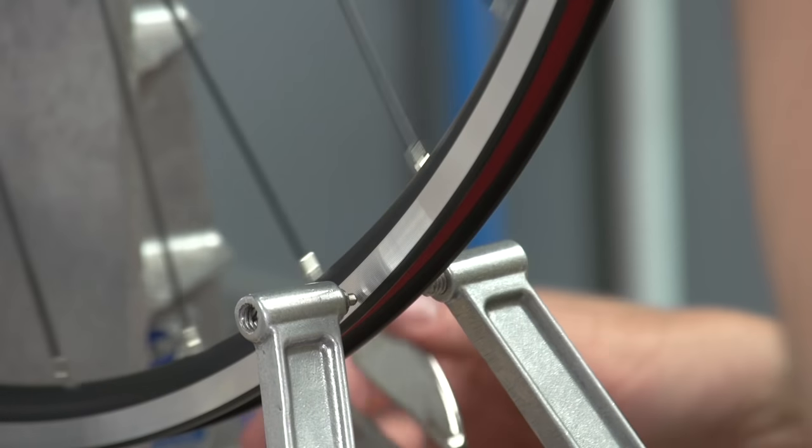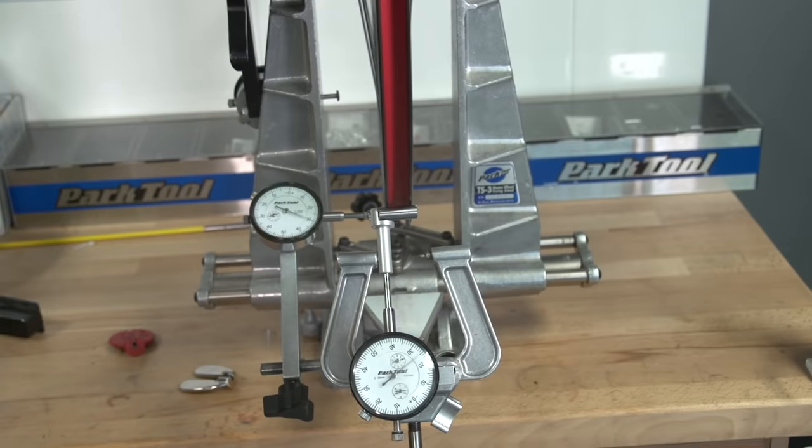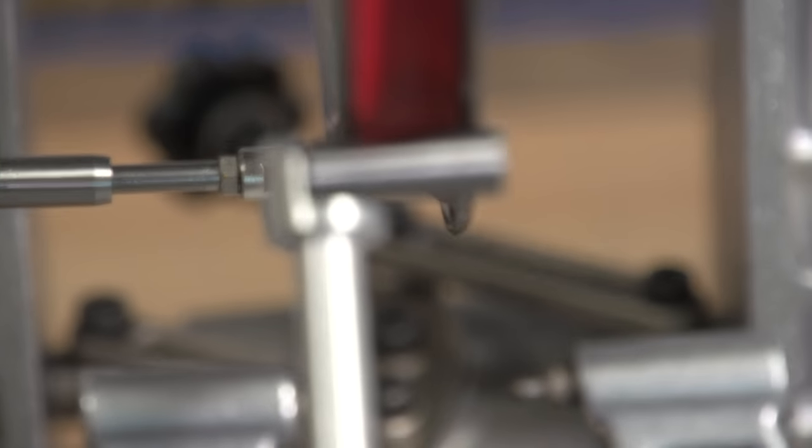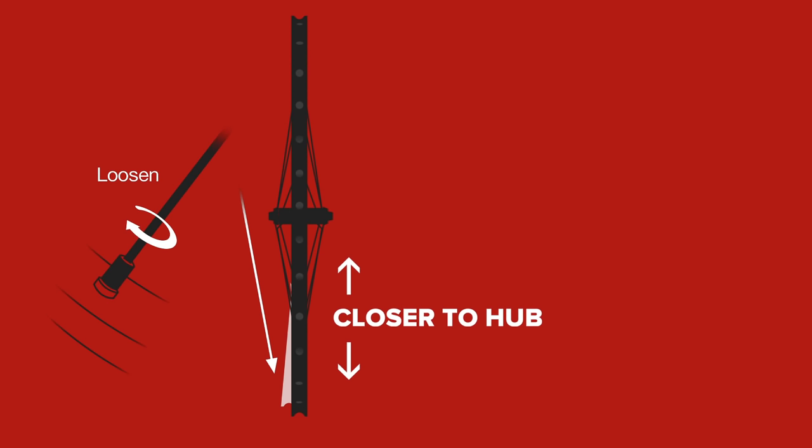If you've got a wheel truing stand which allows you to see the radial true of the rim, i.e. the distance away from the hub, as well as the side-to-side true, then you can use the following method. If the rim pulls over to one side and it moves slightly away from the hub in terms of its radius, then tighten a spoke on the opposite side. If, however, the rim moves to one side but also moves closer to the hub, then loosen the spoke on the same side.